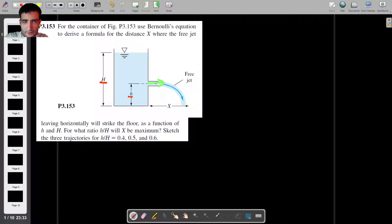Keep in mind that what we actually have to find is we would have to plot this distance x, the range of the water leaving the container as a function of small h and uppercase H. And the next question is, what's the ratio of h over H for which that distance is maximum? To do this, one simple way to approach this is...